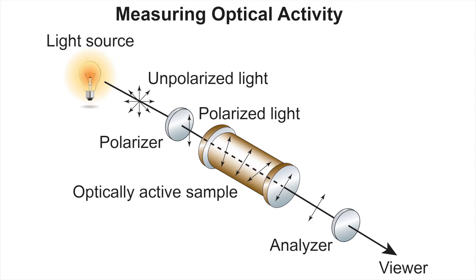You would then pass the plane polarized light through your sample which contains your compounds of interest, and then you're going to measure what is the angle of the plane polarized light once it passes through your sample.